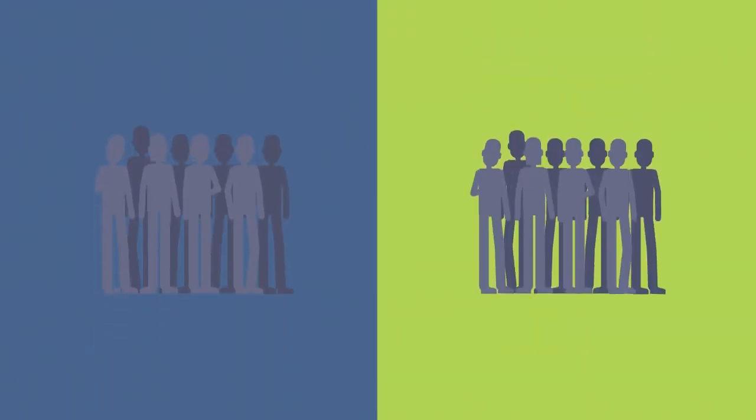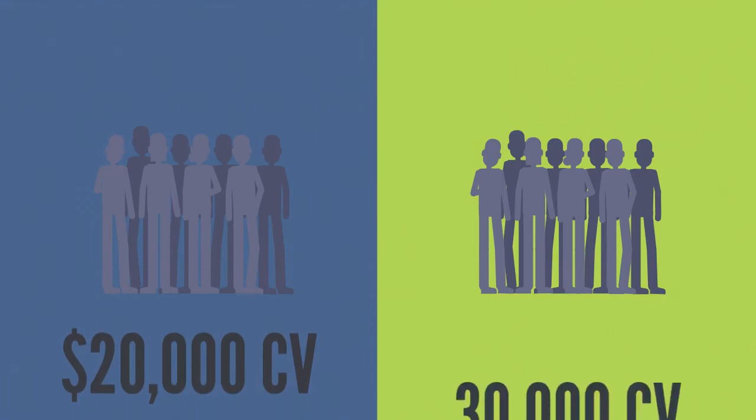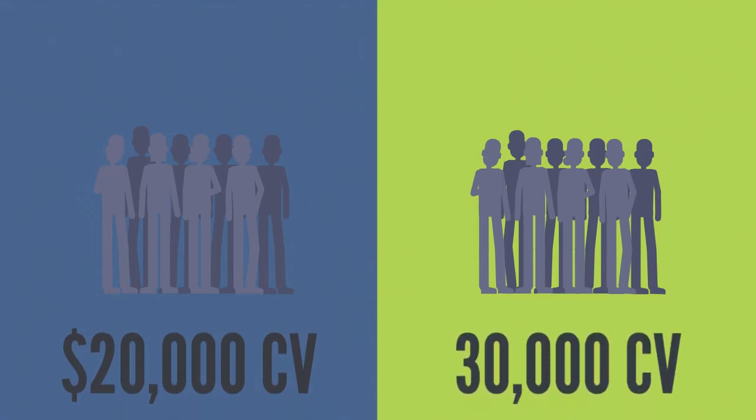Our next bonus is the two-team binary pay. You have a left team and a right team. For example, let's say you have 20,000 CV, commissionable volume, on your left team and 30,000 CV on your right team. The system at the end of every weekly pay period will pay you a percentage from the even match volume anywhere from 10% up to 20%.